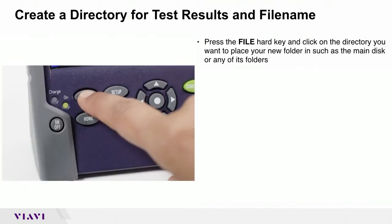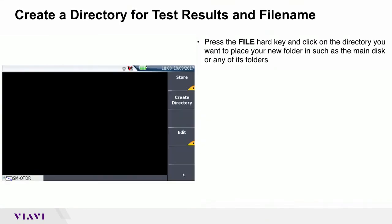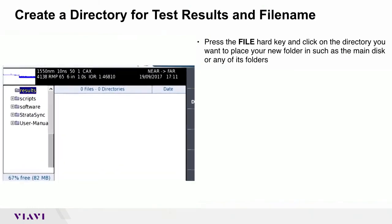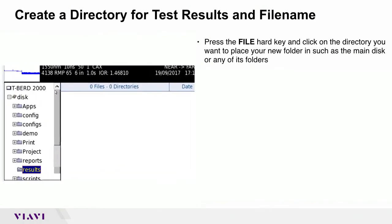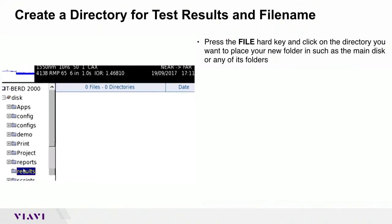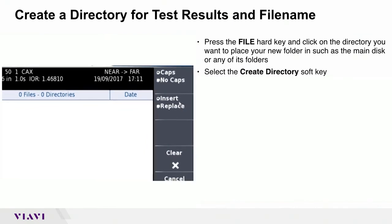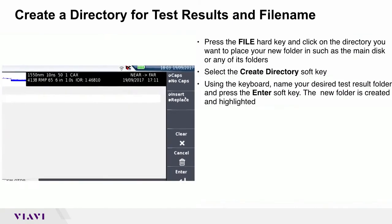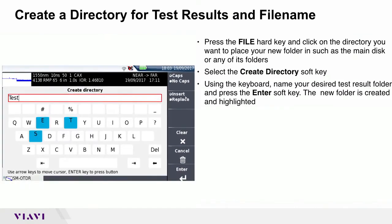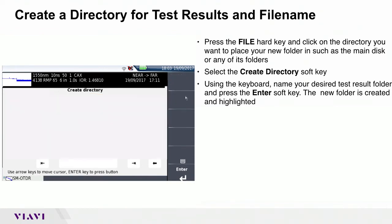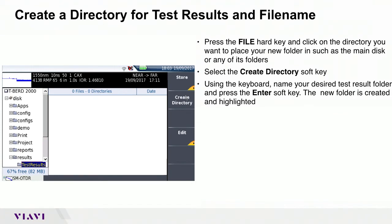Press the FILE hard key and select the directory you want to place your new folder in, such as the MAIN DISC or any of its subfolders. Select the CREATE directory soft key. Using the keyboard, name your desired test result folder and press the ENTER soft key. The new folder is created and highlighted.